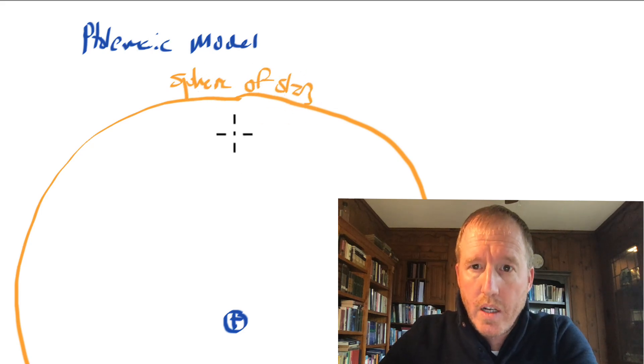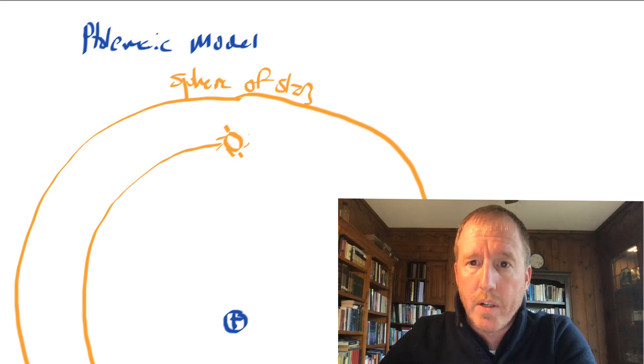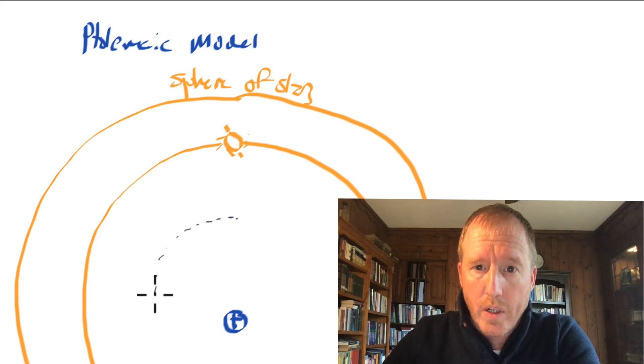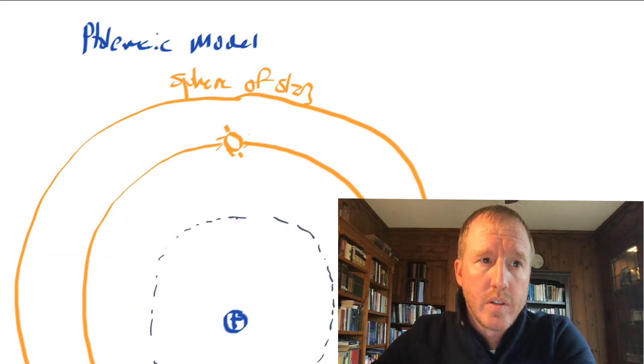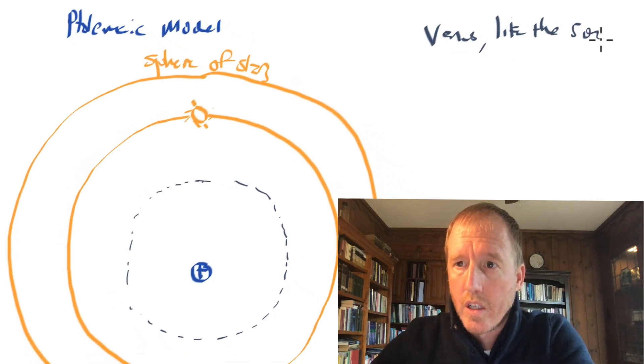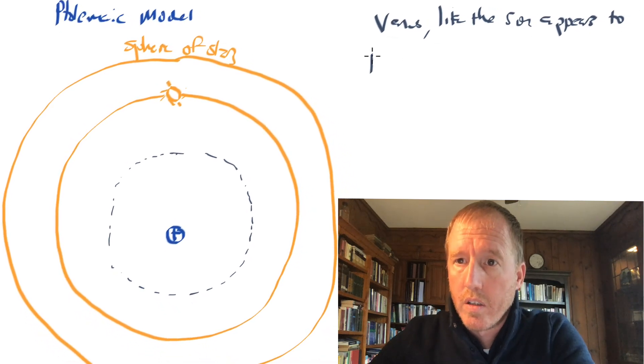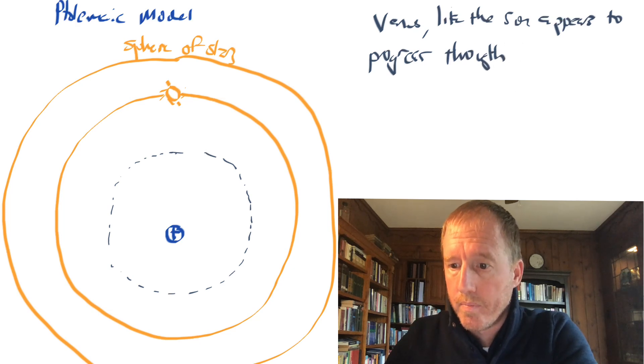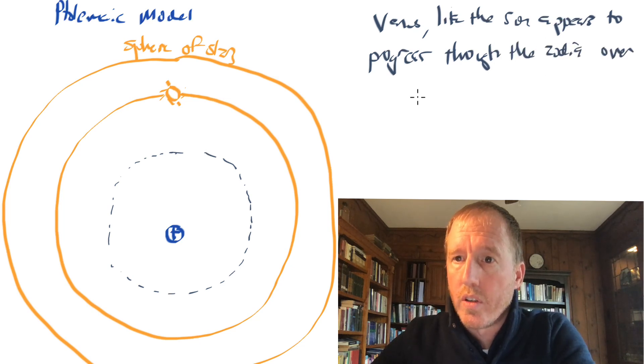And let's suppose that we imagine the sun is riding on a sphere that is going around the earth also. Remember that they believe it's riding on a sphere, but it's not exactly centered on the earth. And then let's talk about the motion of Venus. Venus appears to be going around the earth as well. Let me make a couple of notes here. Venus, like the sun, appears to progress through the zodiac over the course of about 365 and a quarter days.